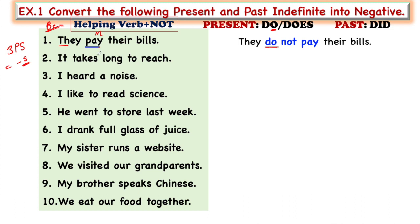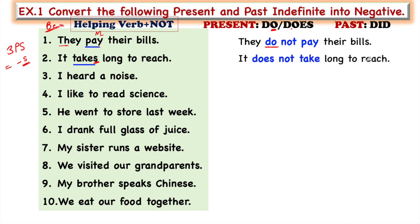'It takes long to reach' — the first step is to recognize the tense. Ending with S means present indefinite tense. The subject is 'it,' which is third person singular, so we choose 'does.' The negative becomes: 'It does not take long to reach.' Next, 'I heard a noise' — 'heard' is the second form of verb, so this is past indefinite tense.